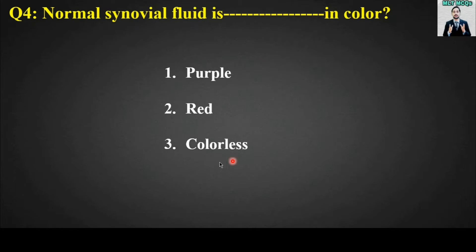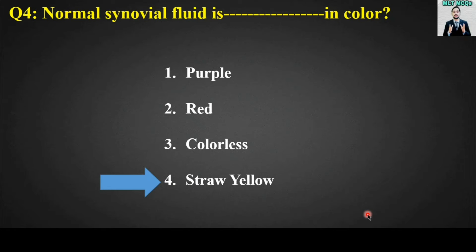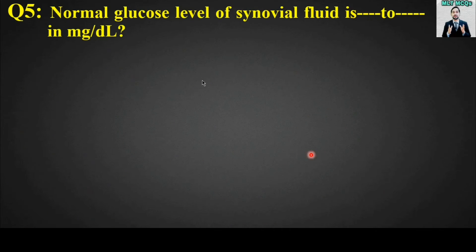MCQ number four: Normal synovial fluid is blank in color. Options are: purple, red, colorless, or straw yellow. The right answer for this MCQ is option number four — normal synovial fluid is straw yellow in color.